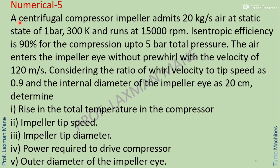Next numerical: a centrifugal compressor impeller admits 20 kg per second air at static conditions of 1 bar and 300 Kelvin, and runs at 15,000 RPM. Isentropic efficiency is 90% for compression up to 5 bar total pressure. Air enters the impeller eye without pre-whirl with a velocity of 120 m/s. The ratio of whirl velocity to tip speed is 0.9 (slip factor). Internal diameter of the impeller eye is 20 cm. Determine rise in total temperature, impeller tip speed, tip diameter, power, and outer diameter of the impeller eye.